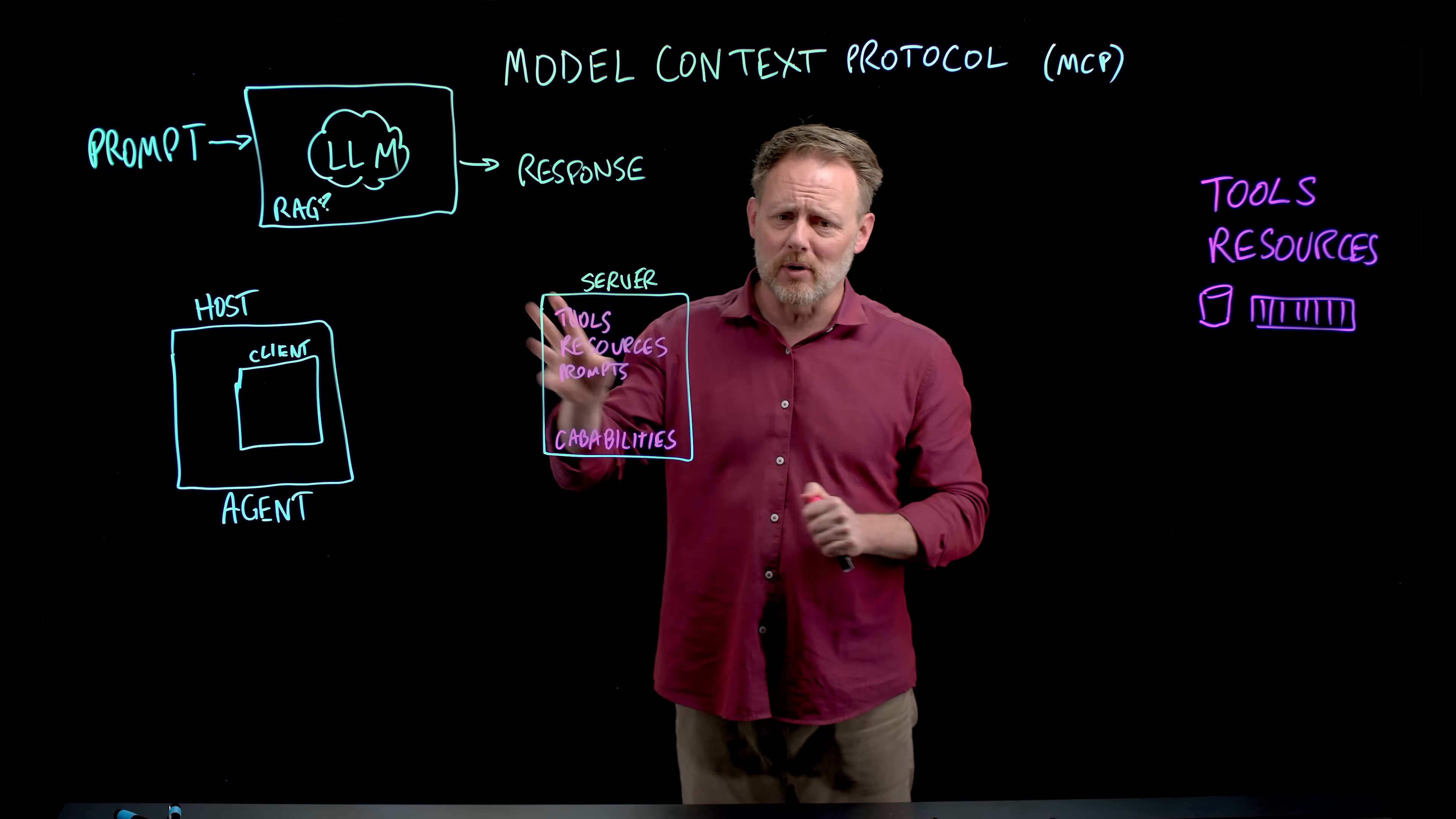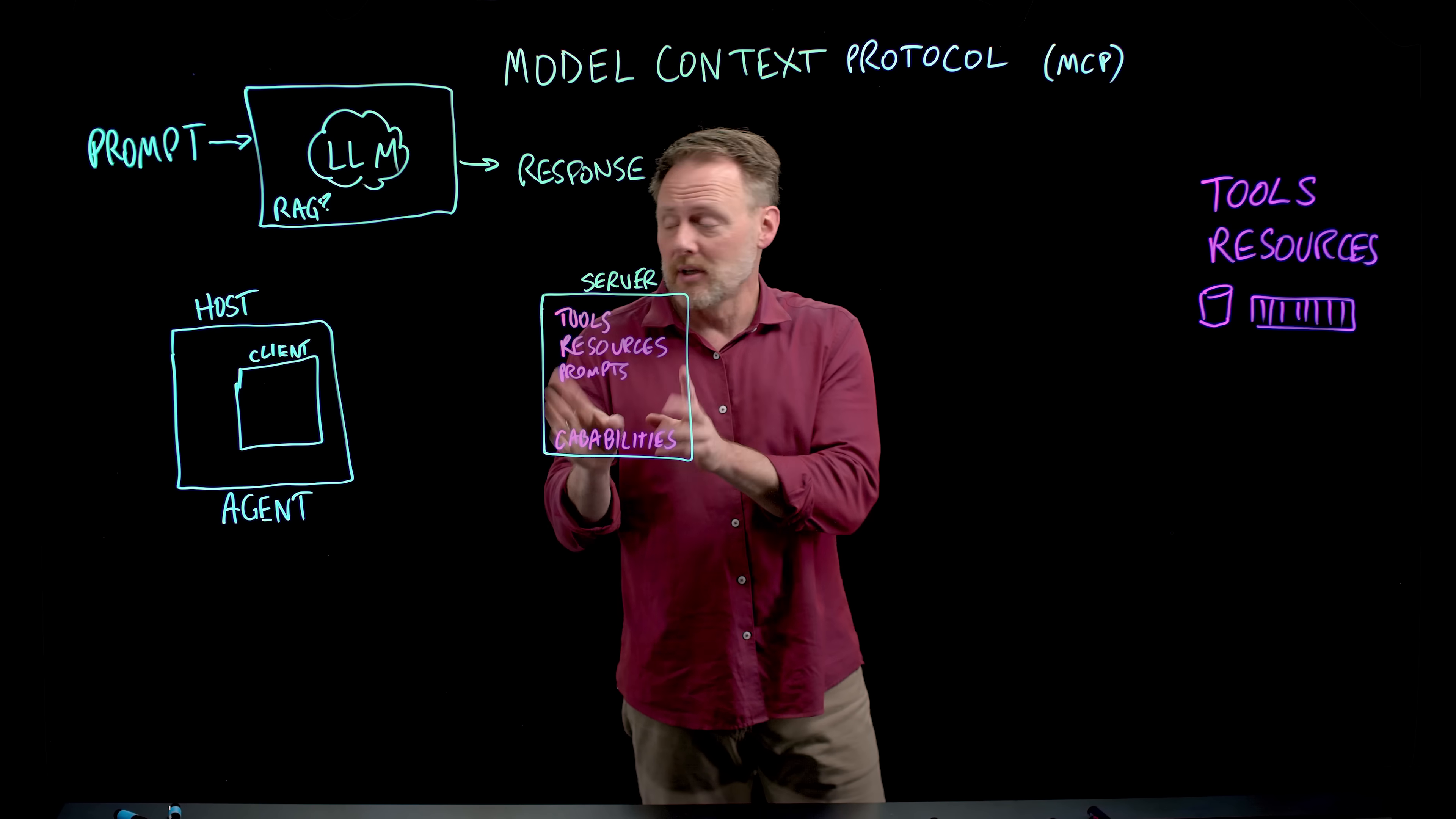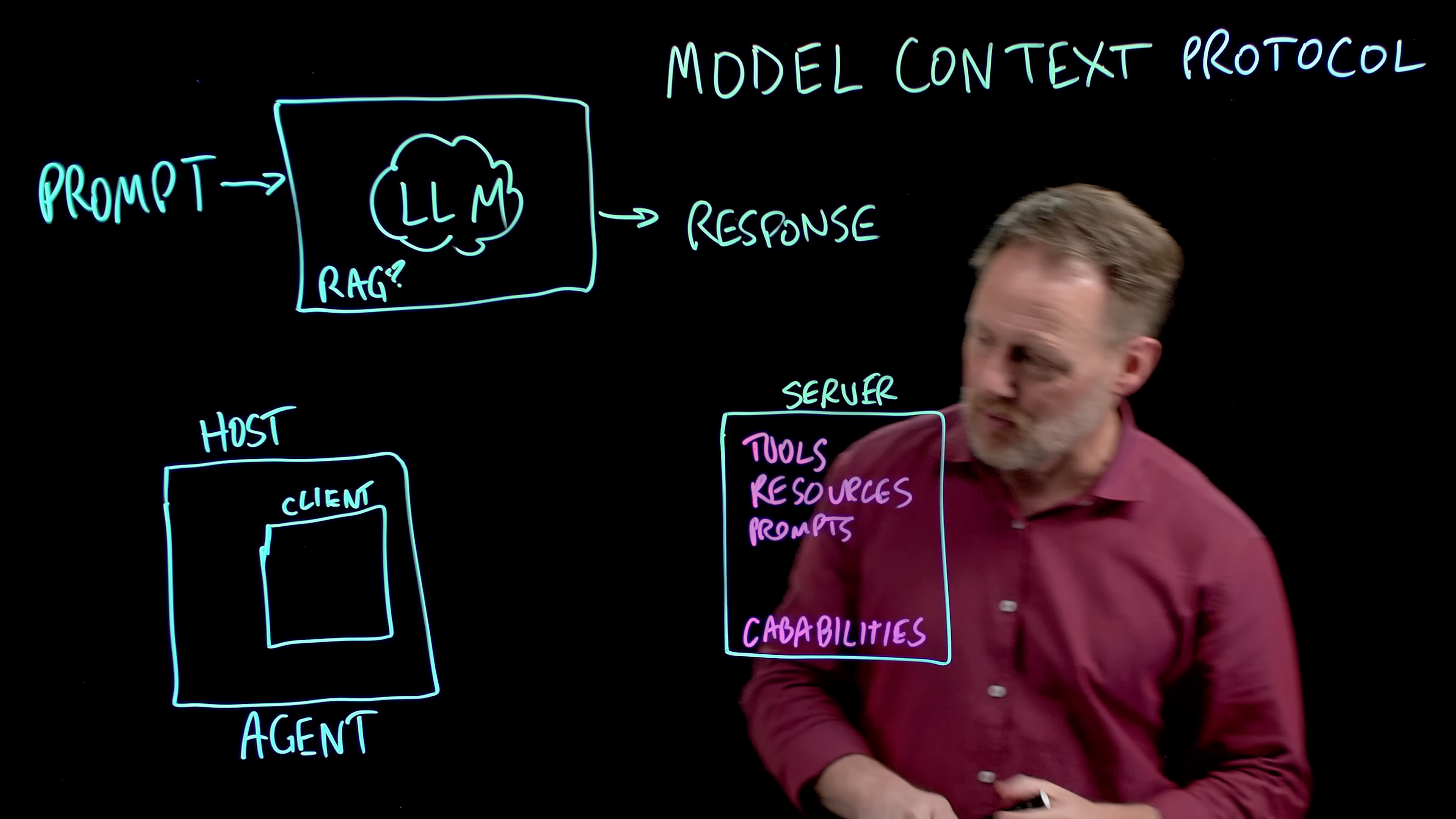So this is a server process. There's a URL port, and a variety of well-known RESTful endpoints described by the MCP specification that are implemented by this server, including this capabilities list that tells the host application, tells the client whether there are tools present, what sort of resources might be available, what prompts it has, et cetera.